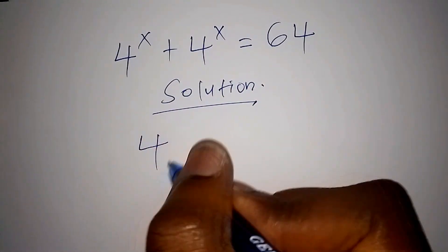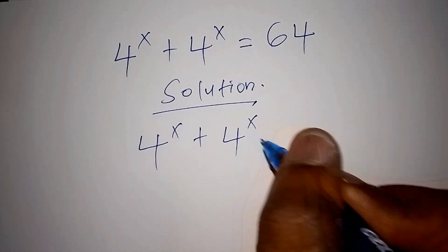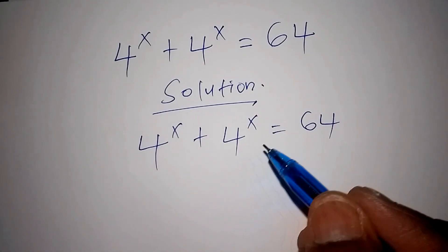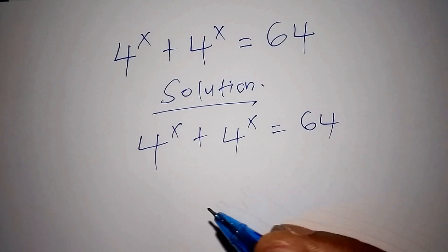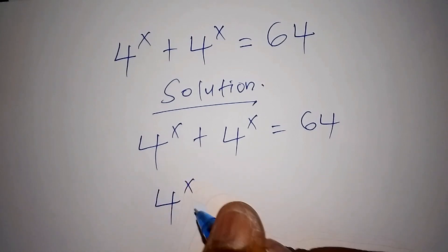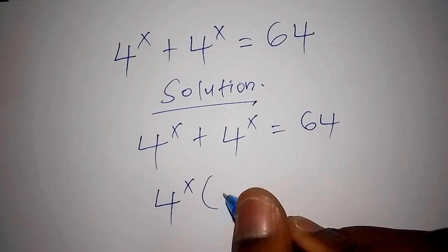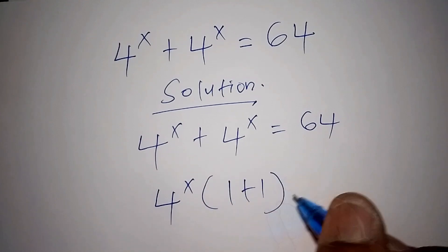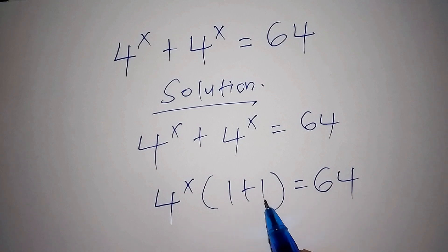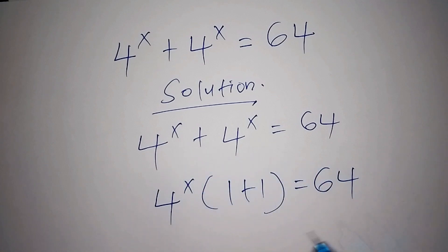On our solution we have 4 to the power of x plus 4 to the power of x is equals to 64. Since 4 to the power of x and 4 to the power of x is common, we are going to factorize it by saying that 4 to the power of x can also be written as 4 to the power of x into bracket 1 plus 1 is equals to 64. Because when we open this bracket we shall get 4 to the power of x plus 4 to the power of x.